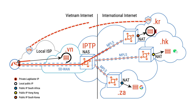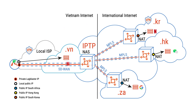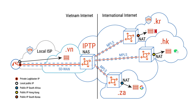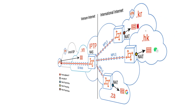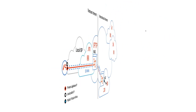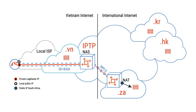Lag Blaster is similar to SD-WAN in being able to classify traffic by application — such as YouTube, Facebook, KakaoTalk, etc. — and route them to desired destinations. Lag Blaster is also able to route all destination prefixes of a country.